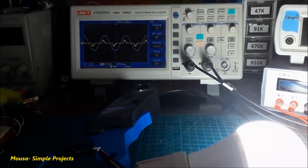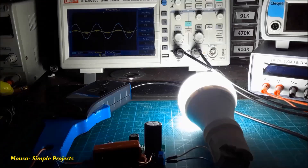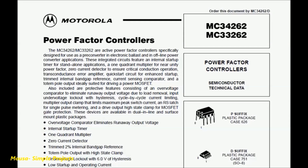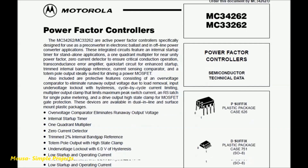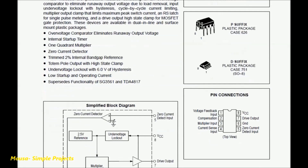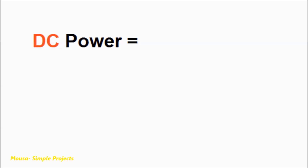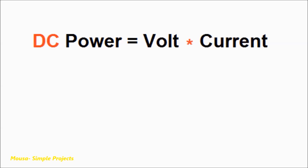In this video I want to show you how to design and make active power factor correction using the MC33262 IC. The power in DC devices is equal to voltage times current.